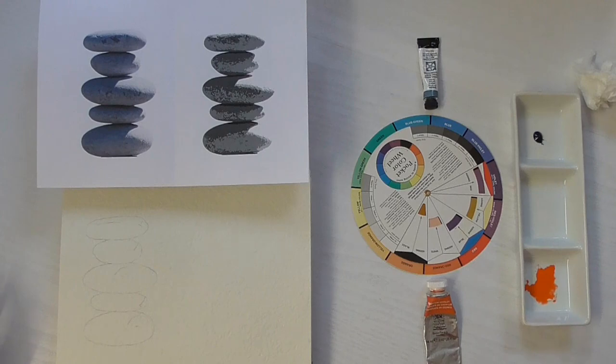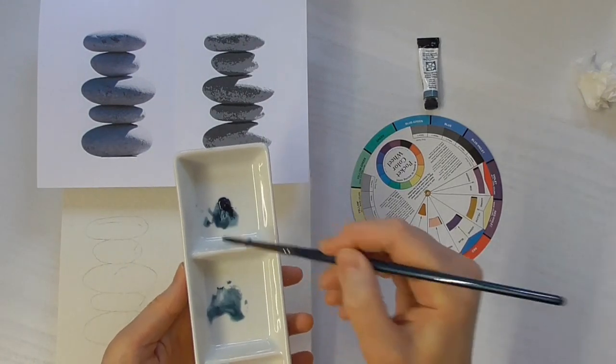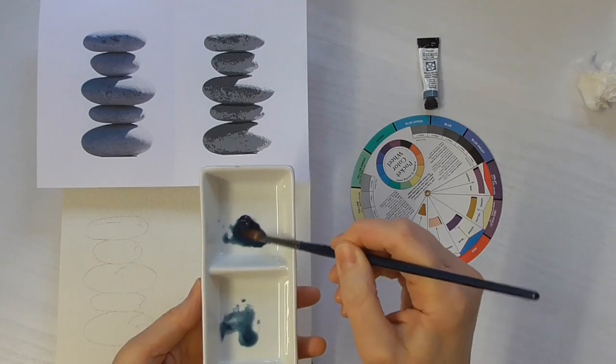Okay, so let's make a start by mixing up a puddle of the Lunar Blue, enough of a puddle for us to do the whole pile of these five lovely pebbles.